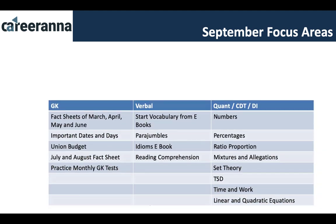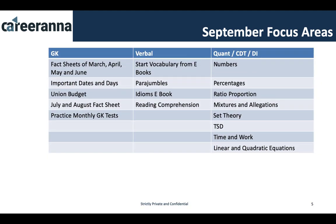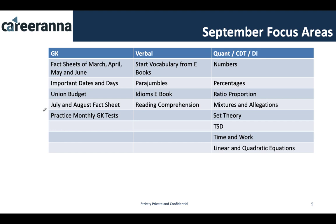Now, what should be the September focus areas? In GK, you should complete current affairs from March, April, May, June, July, and August — these are the current affairs e-books (fact sheets) you should finish in September.